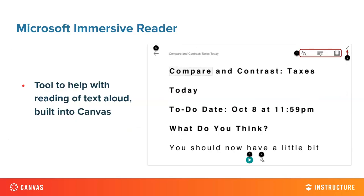Another tool built into Canvas is the Microsoft Immersive Reader. This is a Microsoft tool that we've incorporated into lots of different places inside of Canvas. It's available in places like pages and assignments, where students can have the text on the page read aloud. You can also have the text increased in size so that it's easier to read.